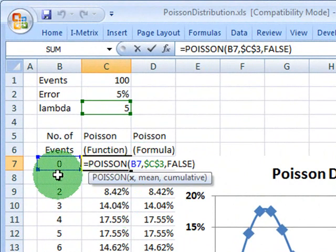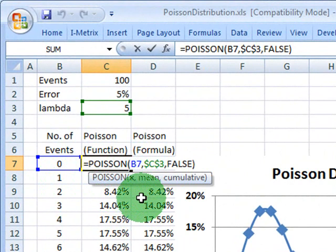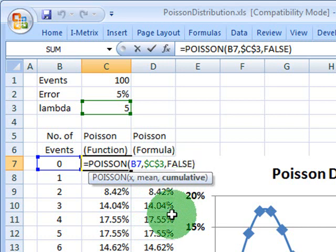I give it the x value. I give it the mean, which in our case is 5. So that's the lambda value right there. And then I give it a false, because I want a density plot, not a cumulative function plot.